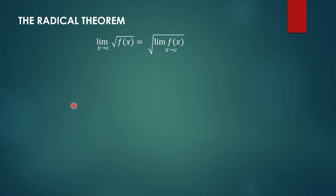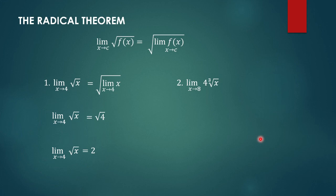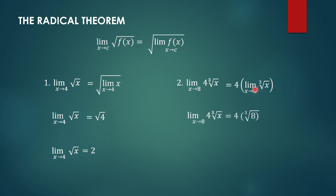For the Radical Theorem, the limit of the square root of x as x approaches 4 can be written as the square root of the limit of x as x approaches 4. The limit of x as x approaches 4 is 4, and taking the square root gives 2. Another example: 4 times the cube root of x as x approaches 8. We have 4 times the limit of the cube root of x as x approaches 8. Evaluating, x is 8, and the cube root of 8 is 2, times 4, giving us 8.